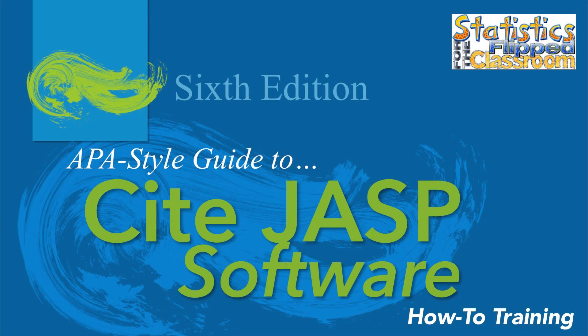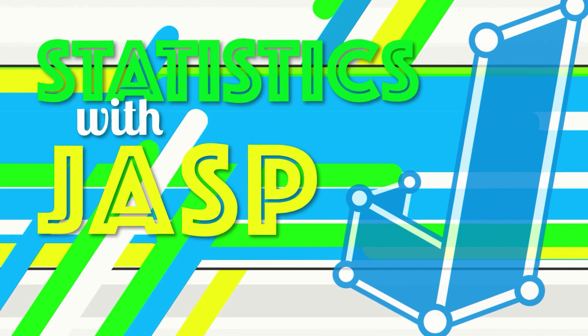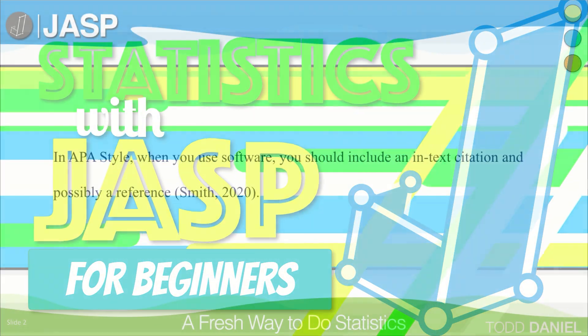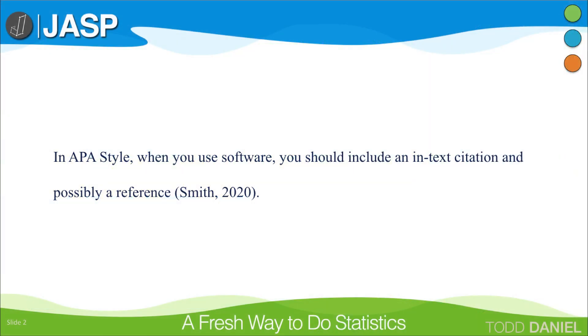Although the APA style manual states that you do not have to reference standard software, you may actually want to cite and reference your use of JASP in your article or class paper. I am going to explain how. Regardless of what statistical software you use for an analysis, you should mention the name of the software that you used within your research paper. But what type of inline citation should you use, and how should you reference it on your references page?